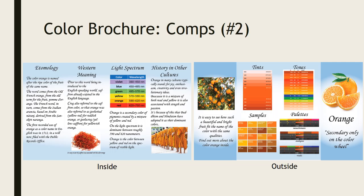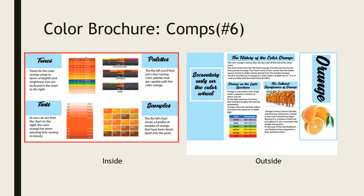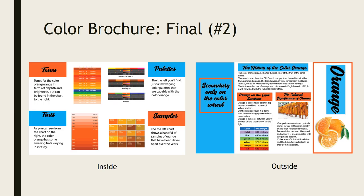I ended up choosing the next one as my final because I really liked how the outside uses the double gate fold to its advantage, using the main design of orange with the logo's secondary color on the color wheel — which I was proud of, probably to my detriment. Some feedback I received was to incorporate more actual orange into the design alongside the blues, so I ended up doing that for some of the headings.